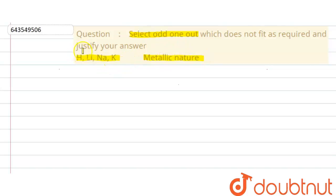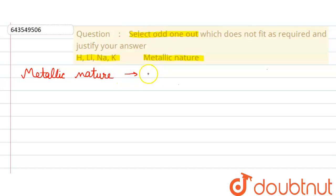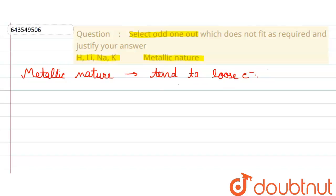To assess metallic nature, we know that elements with metallic nature tend to easily lose electrons. Elements that lose their outermost electron easily have more metallic nature, while elements that do not lose electrons easily have less metallic nature.